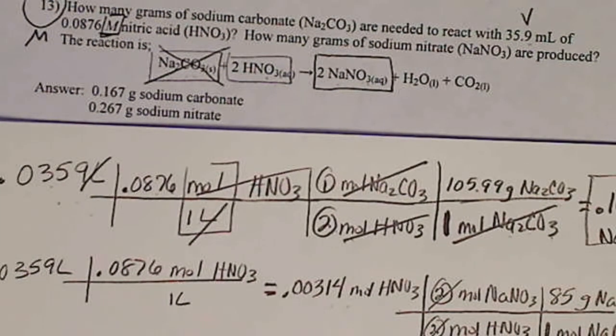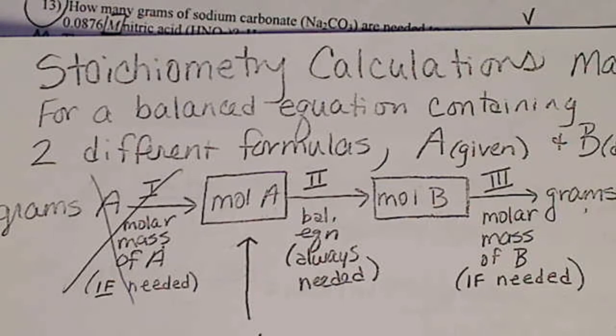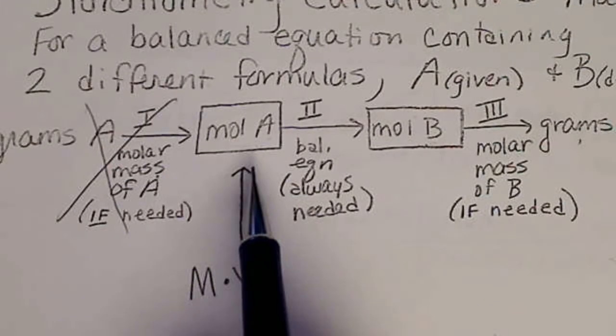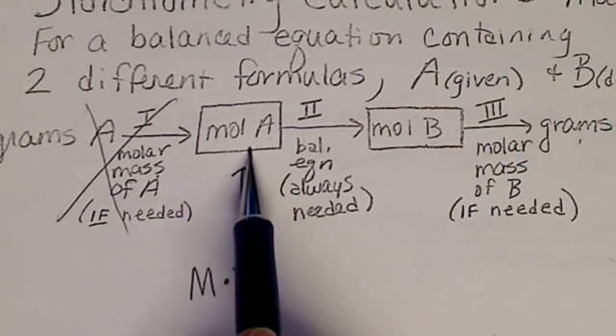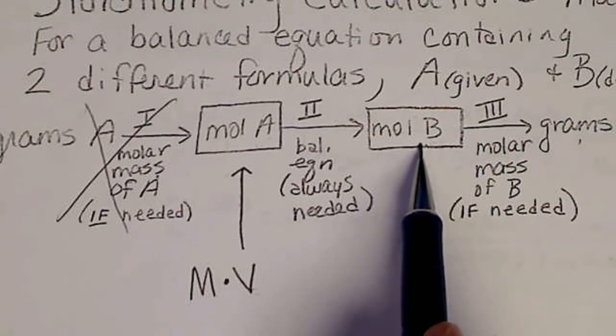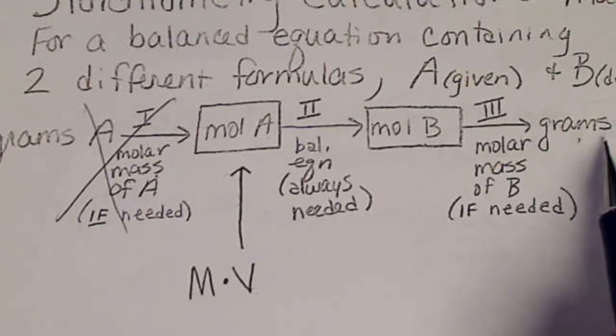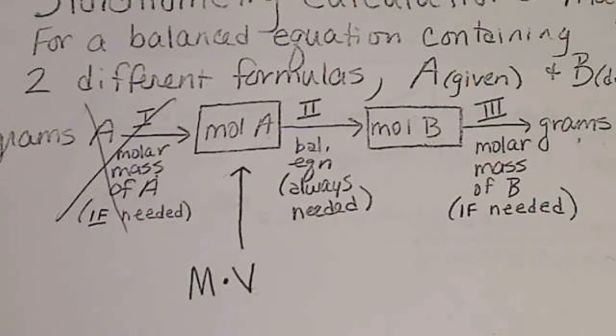Again, we use the M times the V to get to moles of what we're given. We go to the balanced equation to get moles of what we're asked for, and then grams of what we're asked for.